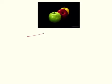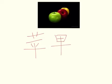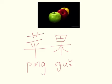苹果. 苹果 — the 果 in 苹果 is the same 果 as in 水果. It's the same character. 苹果.